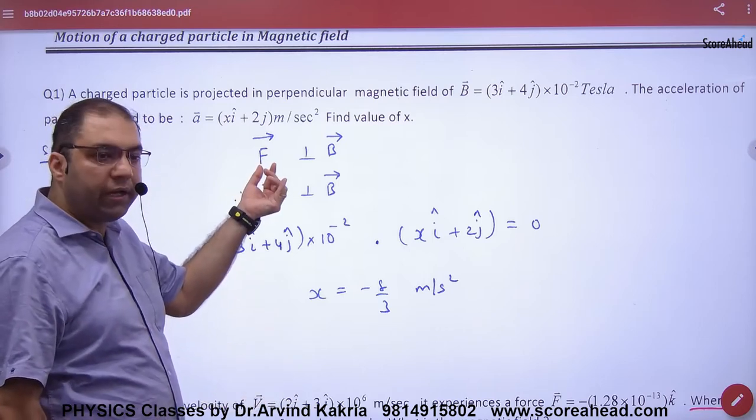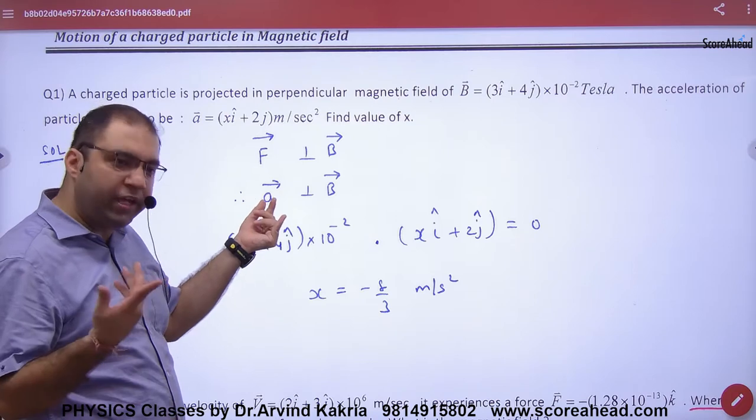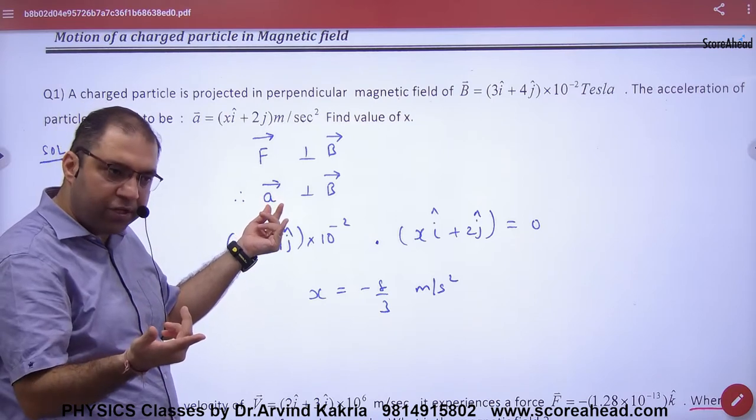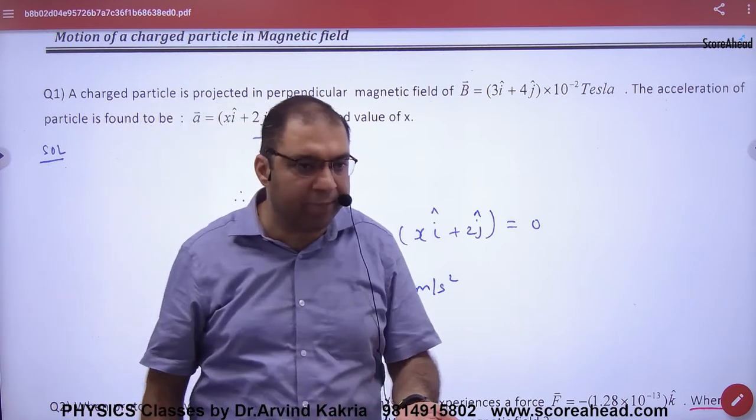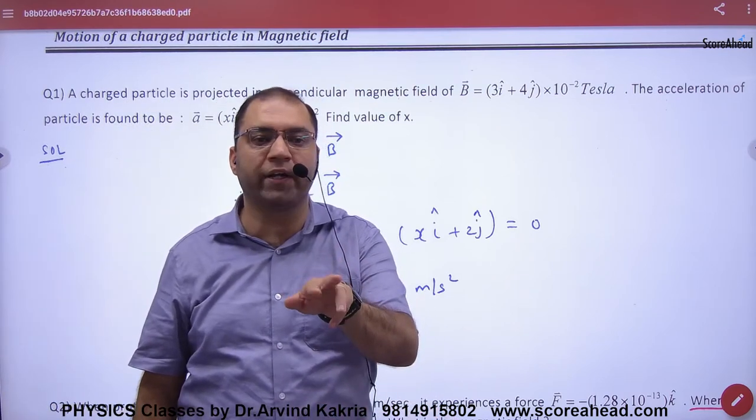The direction of force is acceleration. So if the angle of acceleration and magnetic field is 90, then what will be the dot product of the two vectors? Zero.